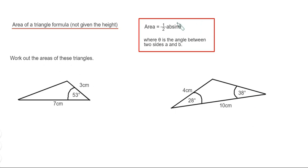The formula is shown in the red box and it is a half AB sin theta, where theta is the angle between the two sides A and B.